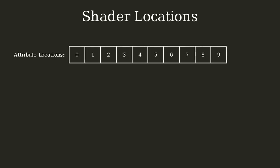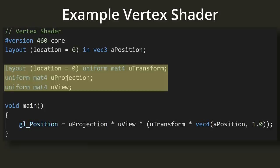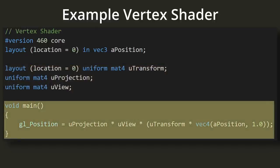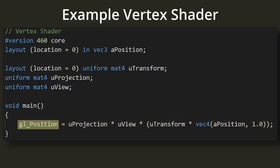Uniform variables have a whole different set of locations from vertex attributes, so you can use the same location 0 for a uniform and a vertex attribute without conflict. The next three lines of code tell the GPU to expect three mat4 (matrix4) variables coming from the CPU. Finally, we get to the main function. Just like in C, we must declare a main function in all of our shaders.